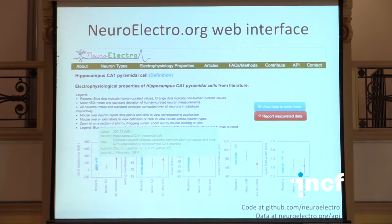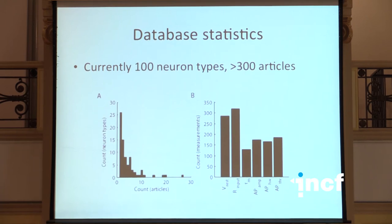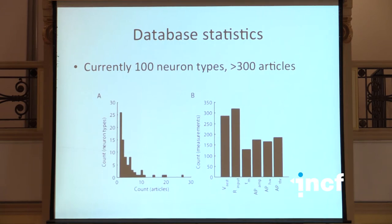The code is on GitHub and there's an API to the data at neuroelectro.org. Currently we index about the hundred most popular neuron types, from about 300 articles — probably between half a percent and ten percent of all available data. The database is still heavily underpopulated. Most neuron types only have a single article or a couple of articles. Some properties are more likely to be mentioned in a data table than others, and we're always trying to add more data.